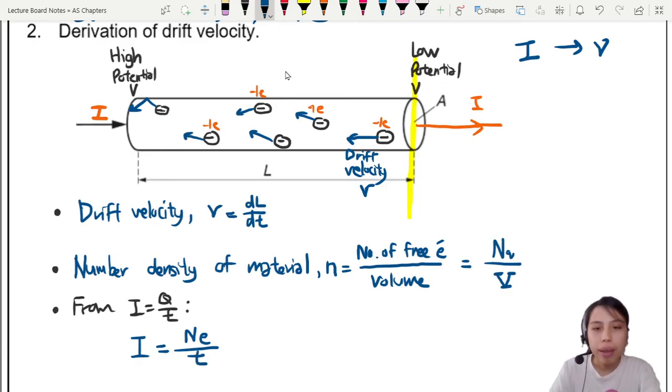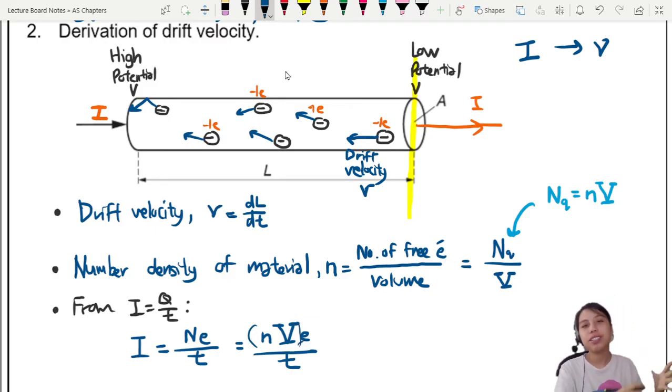But, how many of these number are there? That's where we come to this. The number of charge carriers. So, from this NQ, we can say the number of charge carriers equals to number density times volume. So, I'm going to sub that inside here. So, here we will have NVE over T. And this will give me the total number of charge carriers that come out or pass by a point.